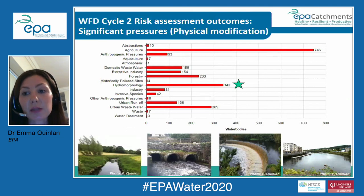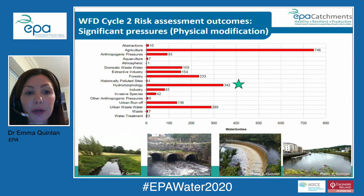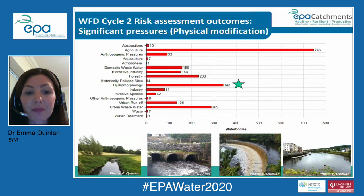Here's the risk assessment outcome for the second cycle of the Water Framework Directive. We have a list of significant pressures, and you can see that hydromorphological pressures — or physical modification — are the second most significant pressure group. Those pressures include things like channelization, barriers such as culverts and weirs, and structures impeding lateral connectivity.